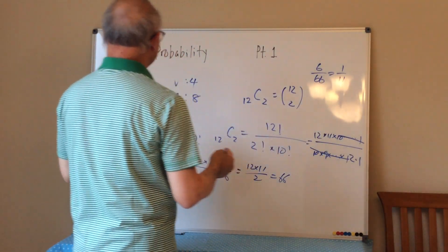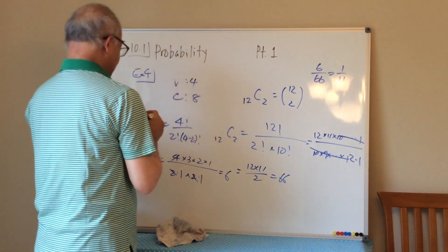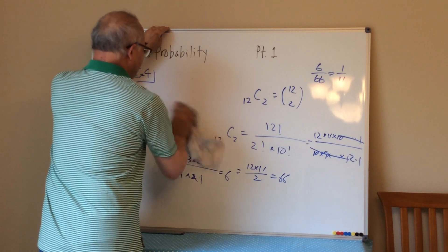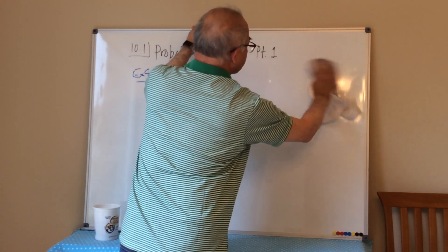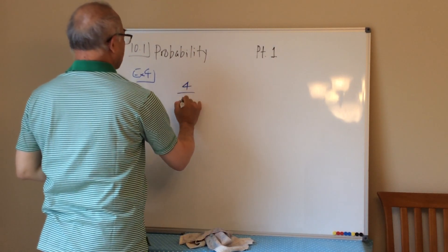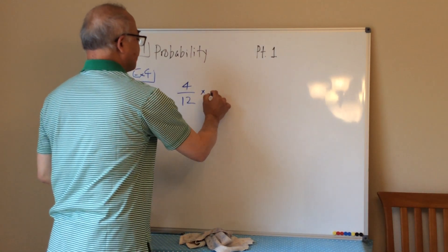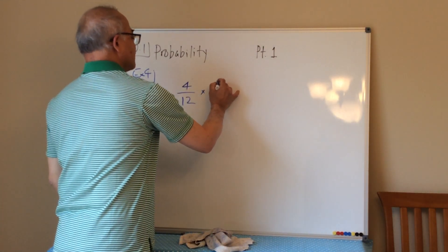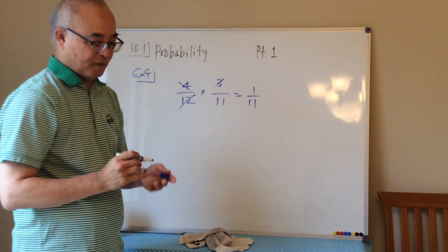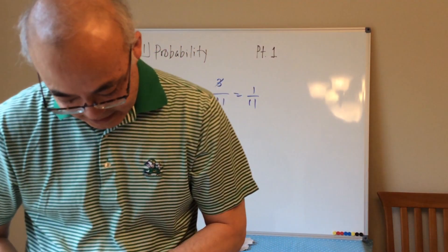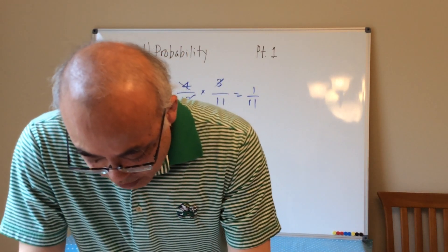Alternatively, the probability of picking a vanilla first is 4/12, and after removing one vanilla there are 3 vanillas left out of 11, so the second pick probability is 3/11. Multiplying: (4/12) × (3/11) = 12/132 = 1/11 — the same answer. This is the multiplication principle of probability.